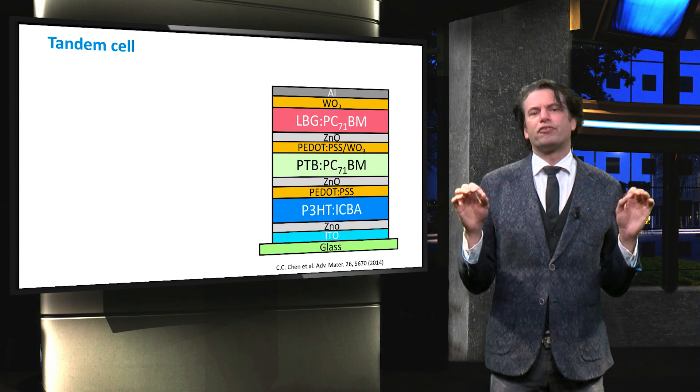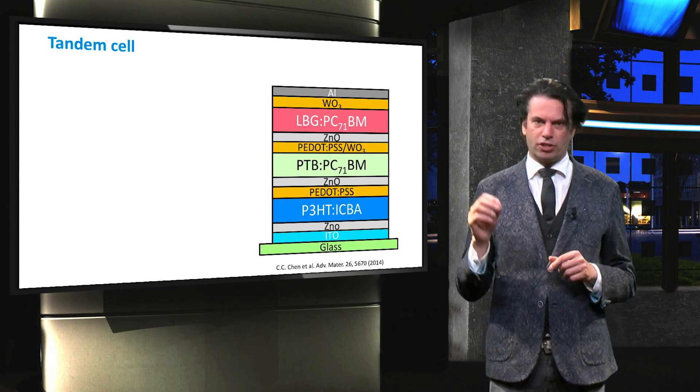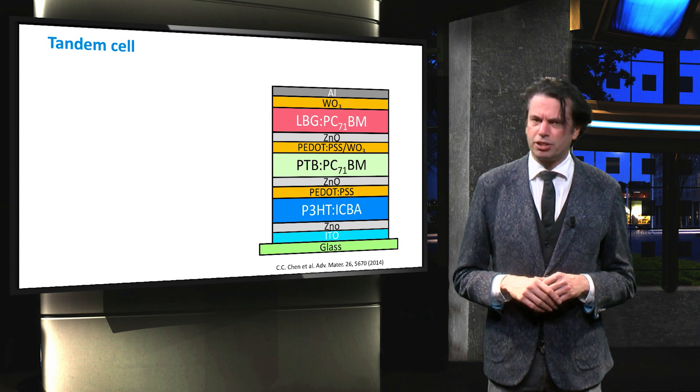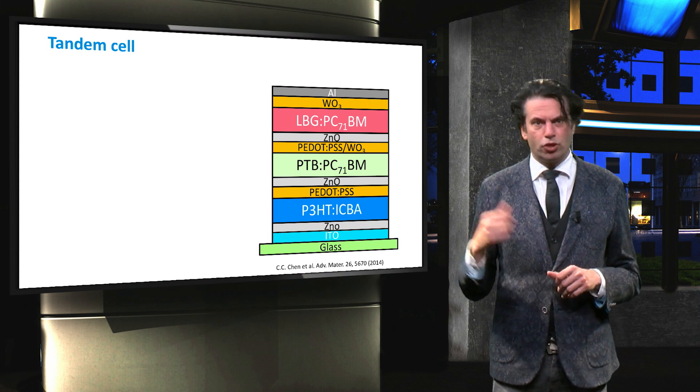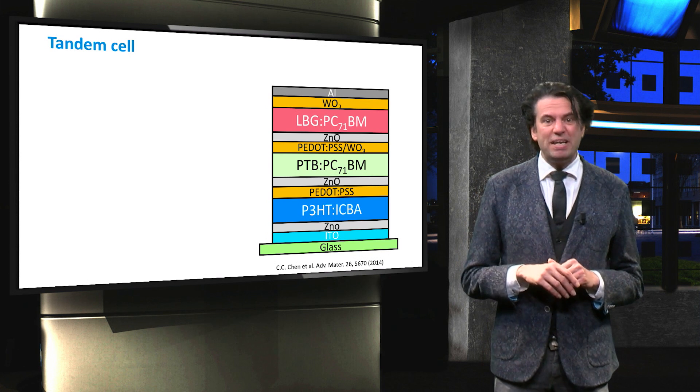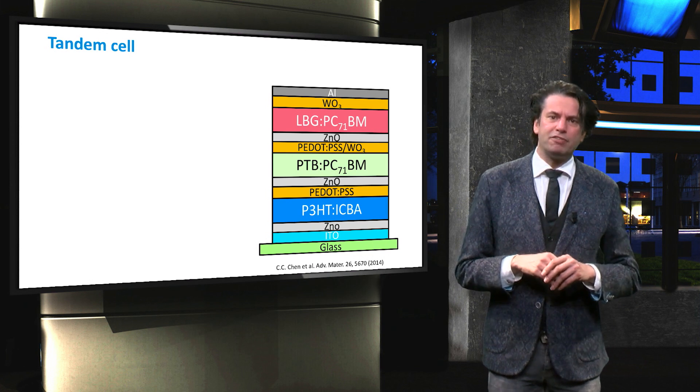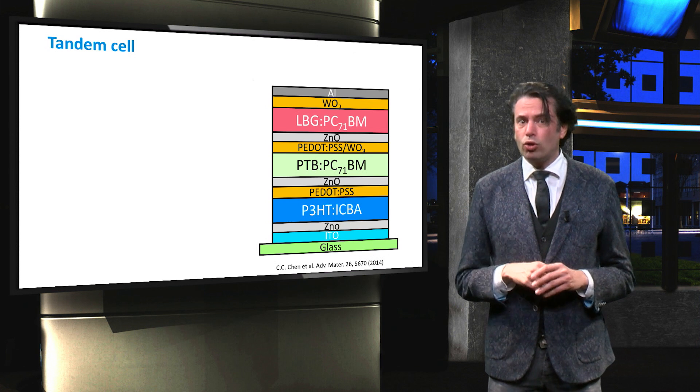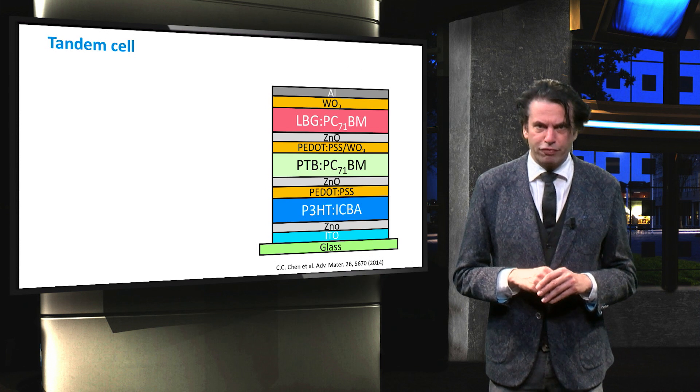However, device configurations based on organic triple junctions have resulted in devices that outperform the best performing single junction organic device. You see a device architecture that has realized an 11.6% conversion efficiency. It's based on an inverted triple PV junction structure. The top cell is based on ICBA:P3HT, the middle cell is based on PTBPB:71BM, and the bottom cell is based on LBG:PB71BM. As electron collecting layers, zinc oxide is used. As hole collecting layers, PEDOT:PSS is used for the top cell and PEDOT:PSS and a tungsten oxide layer for the middle and the bottom cell.